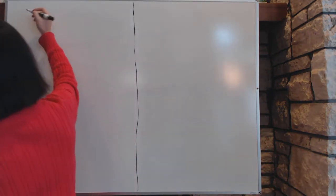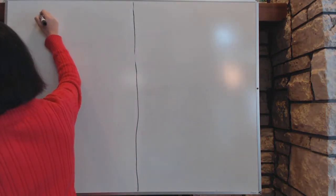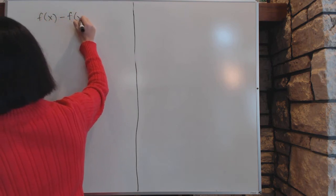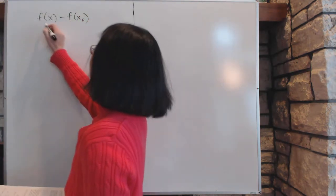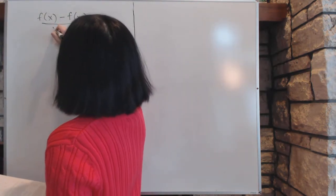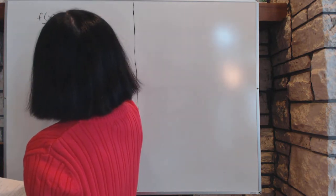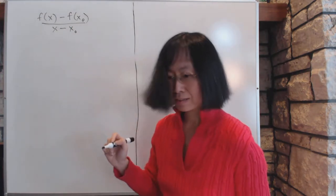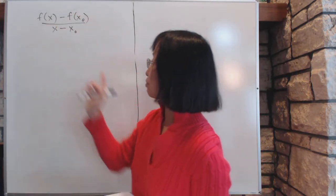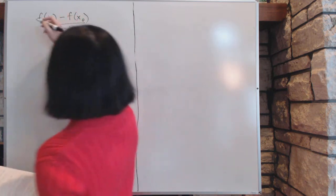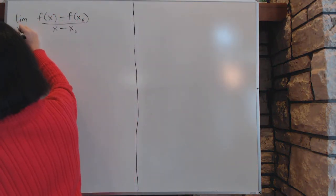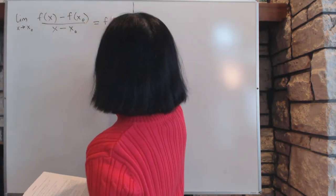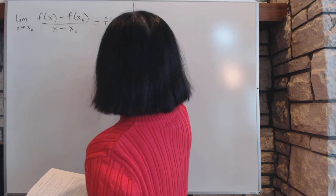A derivative of a function f is by definition, you'll consider this particular thing. Say if you have a point, a function f, and it has a point x at x0, the derivative of f at x0 is defined as this particular quotient, as x approach x0. If the limit of this thing exists, as x approach x0, we call this thing the derivative of f at x0.